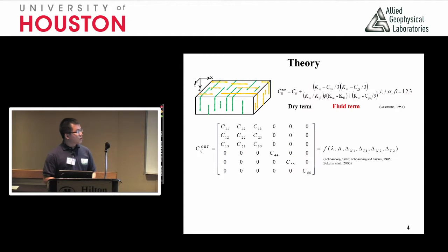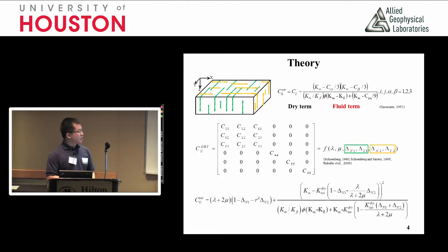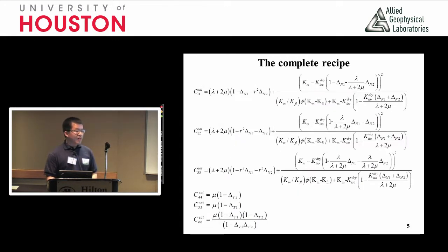The first two parameters are lambda and mu, which we are more familiar with — they describe the isotropic backbone rock. The other four are about the tangential and normal fracture weaknesses, each characterizing one set of the fractures, color coded here. With these six parameters we simplify the stiffness equations into something manageable. This is a theory we developed, and we will use these equations to see how fluid effects on fractured rocks can be understood.